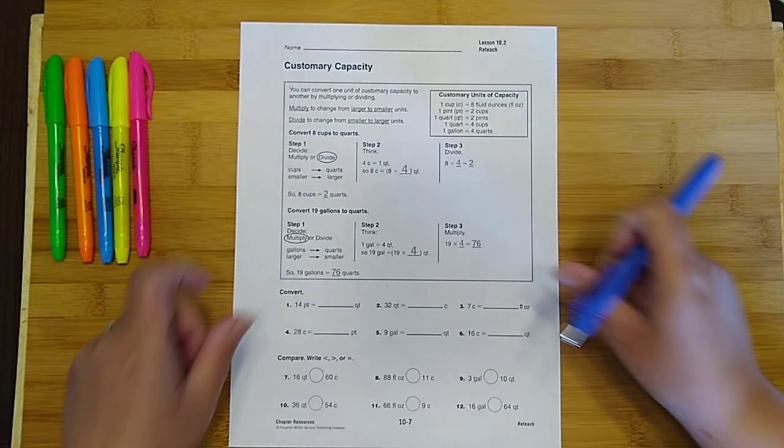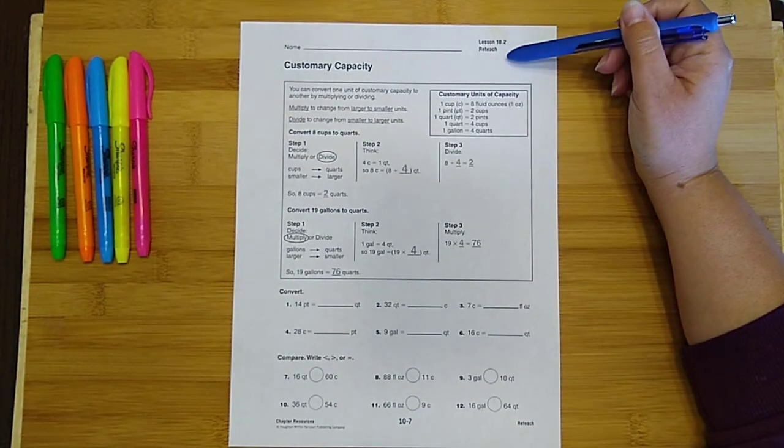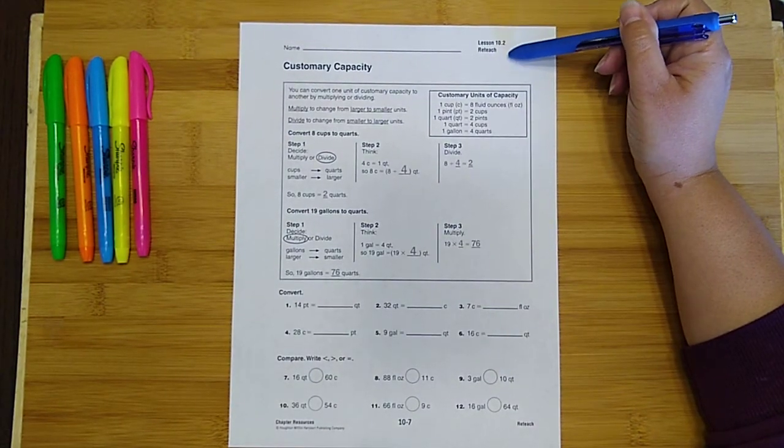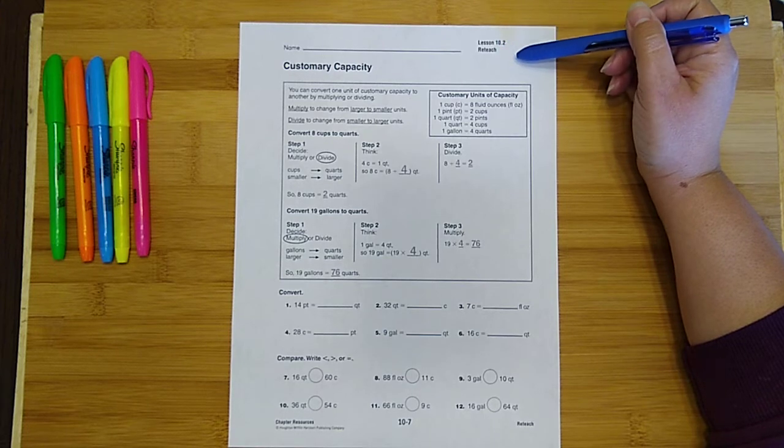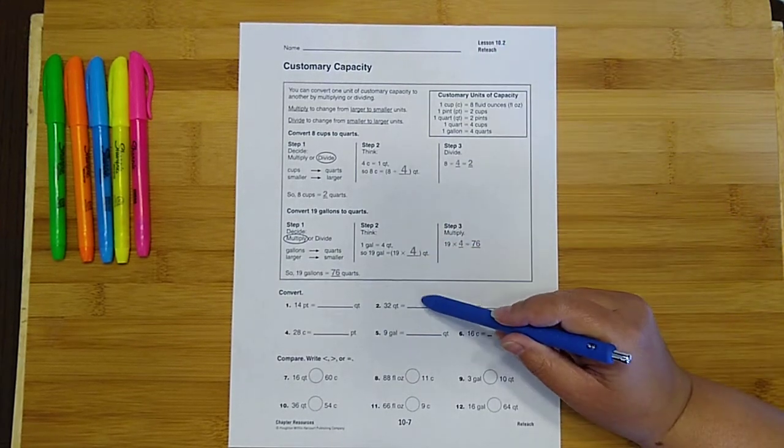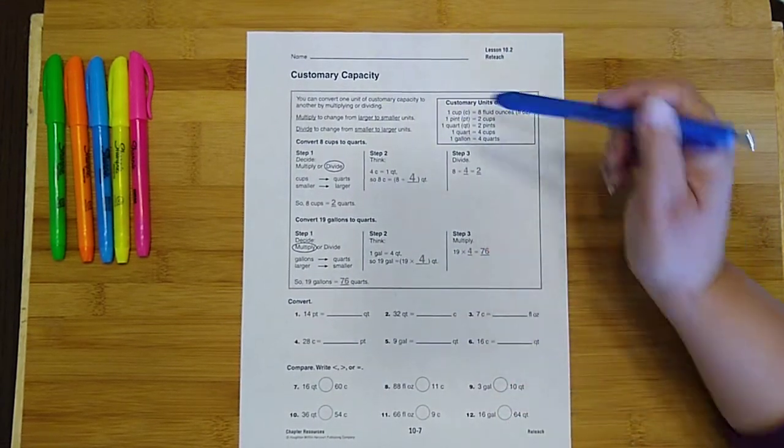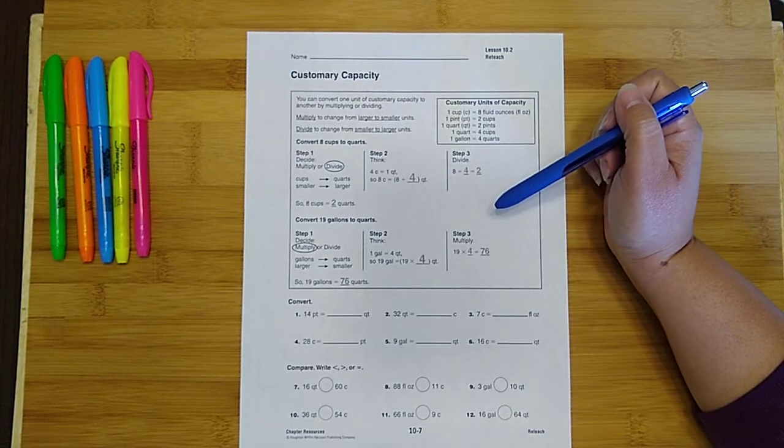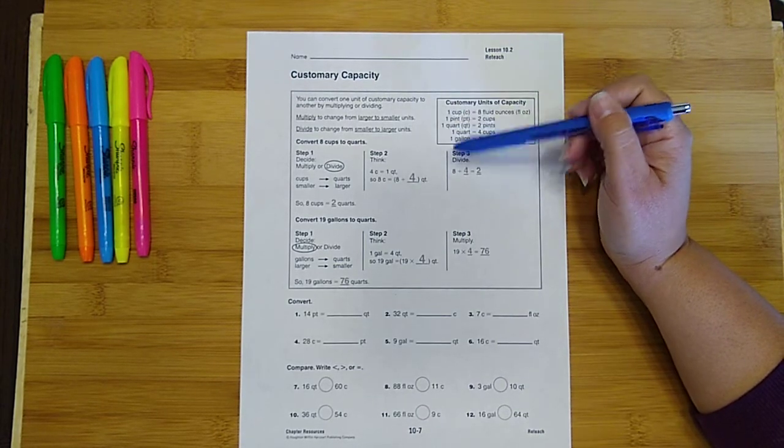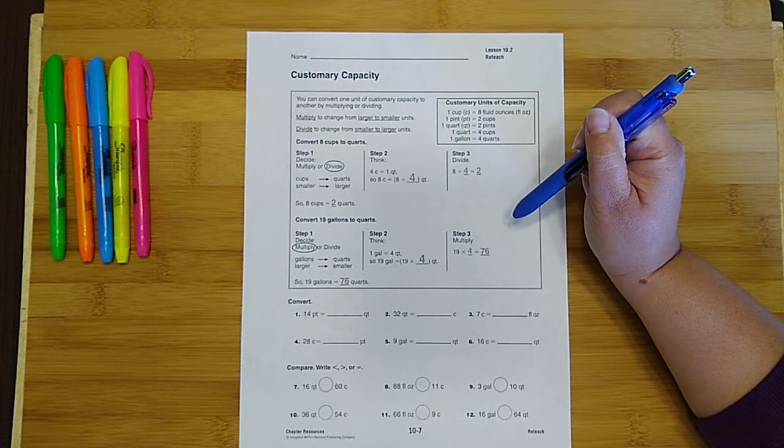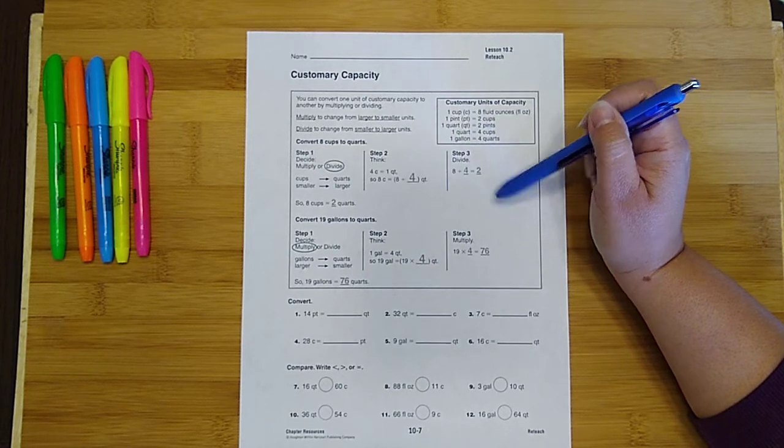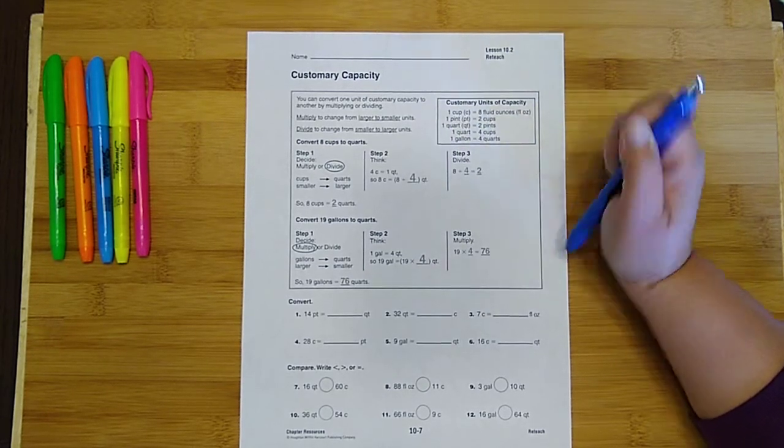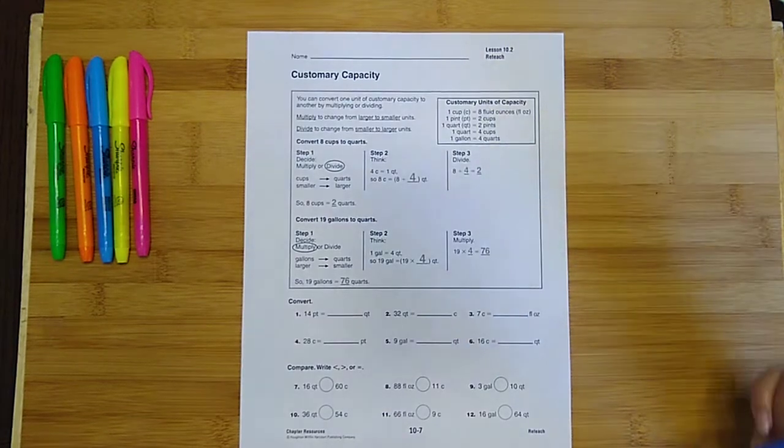If you haven't already, it would be best for you to go ahead and print this reteach lesson. It's lesson 10.2, and if you want, you can find it actually in the description of this YouTube video. So if you scroll down into the description, you might have to click on the show more tab. There will be a link there that will take you to the PDF so you can print this out and do this along with me.